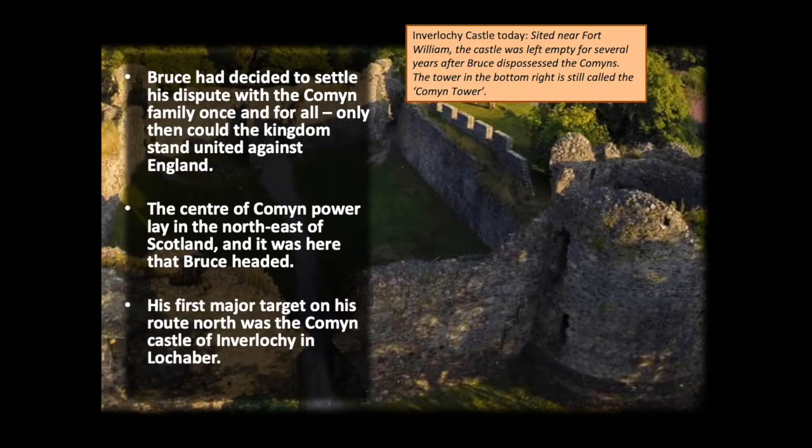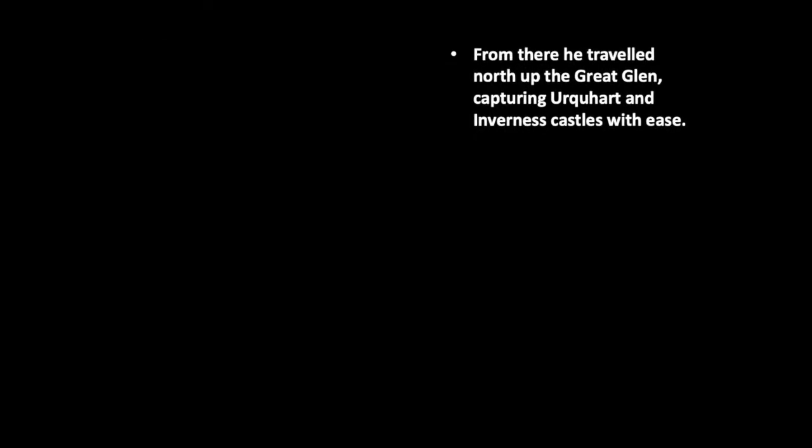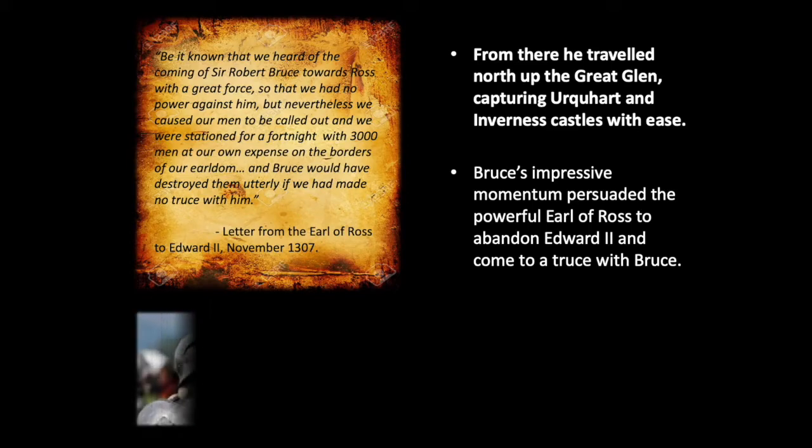Bruce's first major target on his route north was the Comyn castle of Inverlochy in Lochaber — just outside modern-day Fort William, which you can go and visit today. After taking Inverlochy Castle, Bruce travelled north through the Great Glen, capturing Urquhart Castle and then Inverness Castle. Urquhart is the famous ruined castle overlooking Loch Ness seen in many Visit Scotland tourist images. Having taken Inverlochy at the bottom end of the Great Glen — largely ruining it, as it wasn't occupied for at least 50 years after — Bruce made his way north up Loch Ness to Inverness.